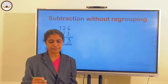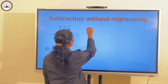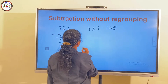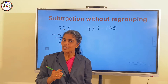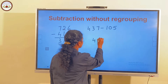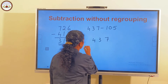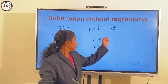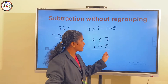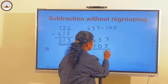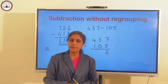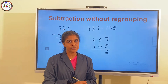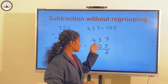Now we give another question: 437 minus 105. First, we arrange the numbers in columns. We subtract the 1's place: 7 minus 5 is 2. Then 3 minus 0 — from the properties of subtraction, we already studied that when you subtract 0 from a number, the difference is the number itself. So 3 minus 0 is 3.